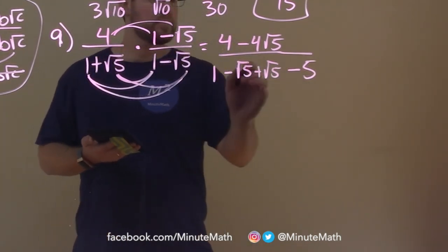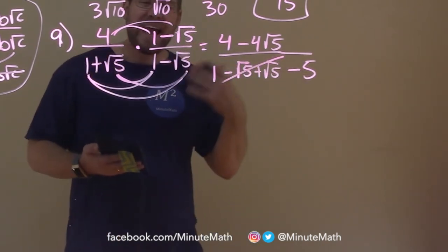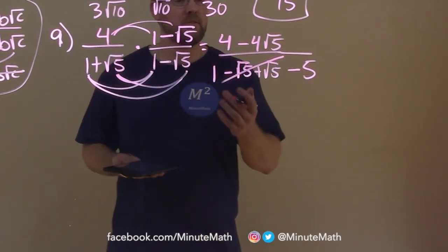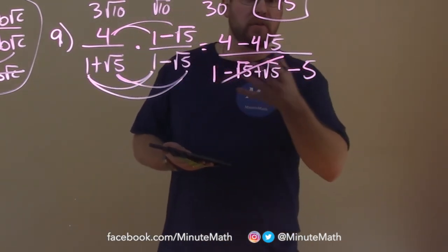Now luckily for us here, remember, a minus square root of 5 and positive square root of 5 cancel. And as you start getting used to writing this and doing that, you will kind of skip this step and just don't really write that. But for now, it's a good visual.